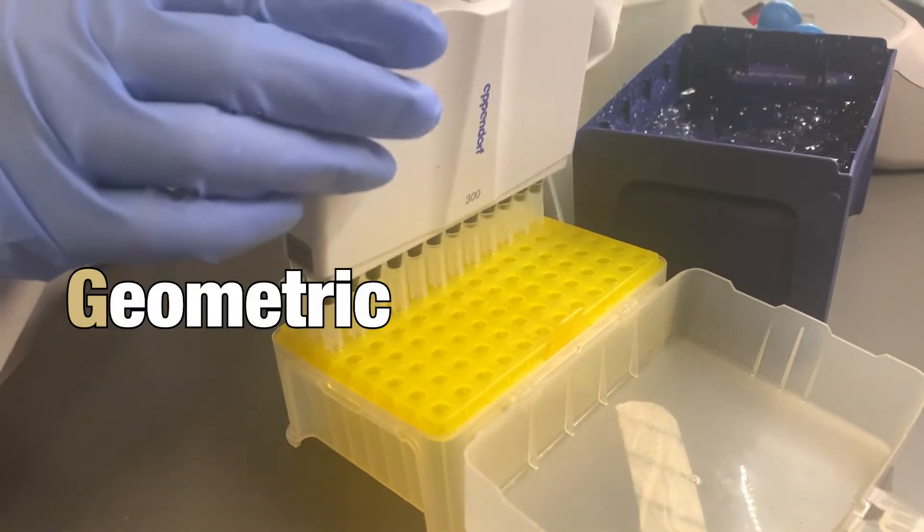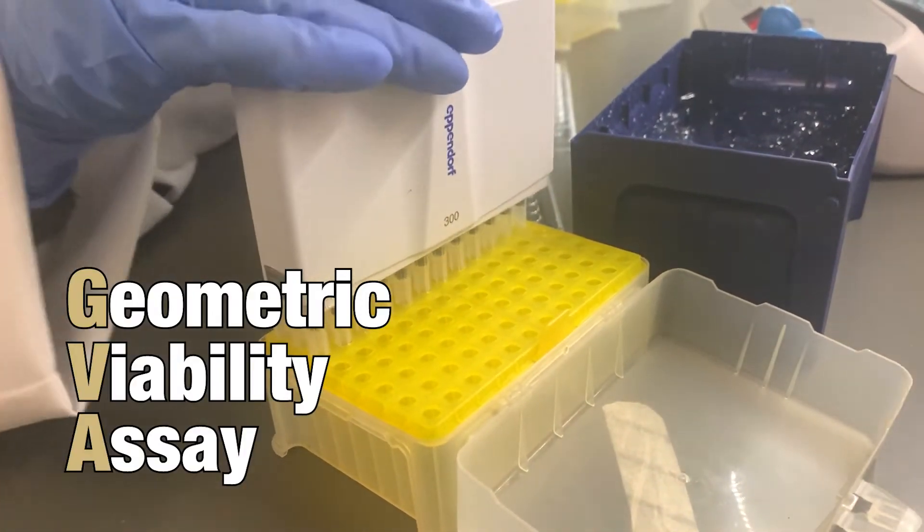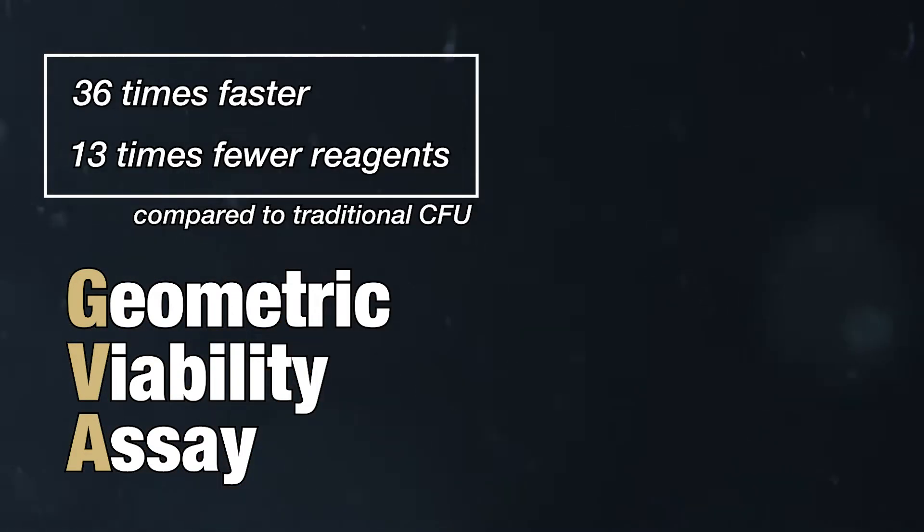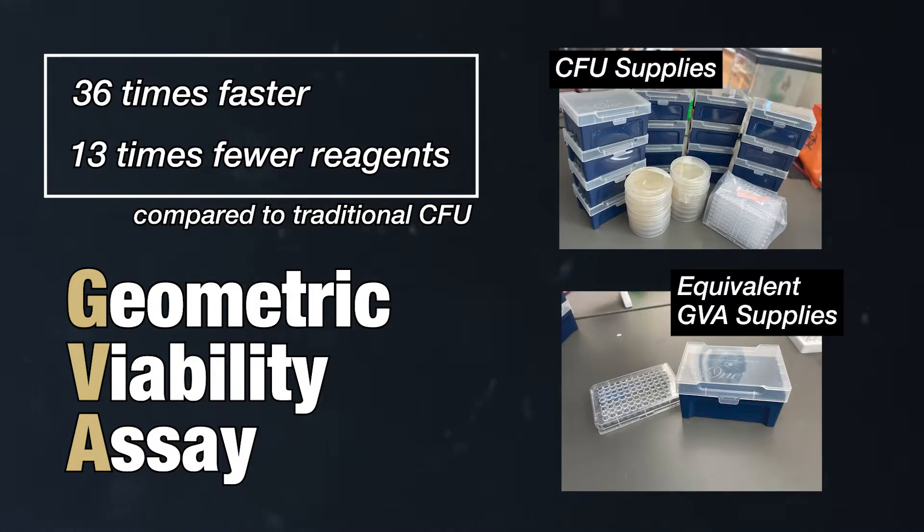Here we introduce the geometric viability assay, also known as GVA. GVA reduces the time and materials for CFU measurements by over tenfold while maintaining a simple protocol.